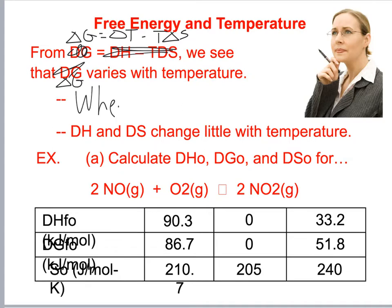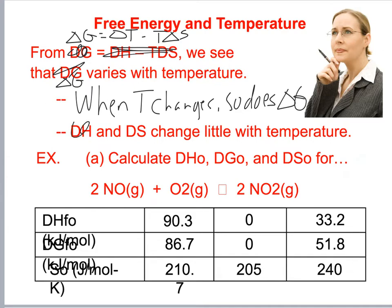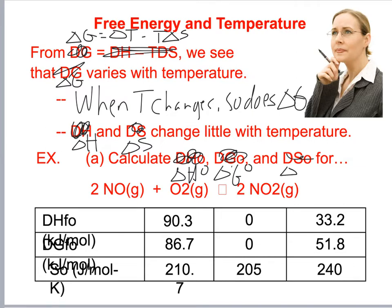When the temperature changes, so does delta G. Delta H and delta S change little with temperature. So in this problem we'll calculate delta H naught, delta G naught, and delta S naught given the following data.